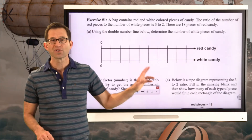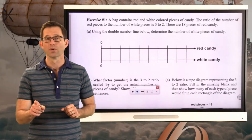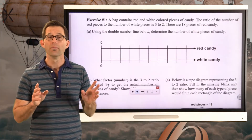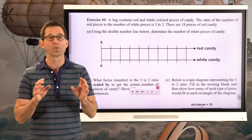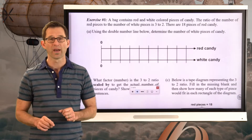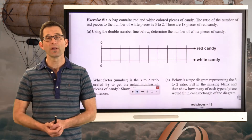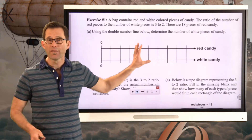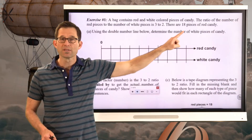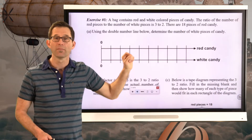We're going to start by using a double number line — a tool from the last lesson — then move to a tape diagram to see how the two approaches mirror each other, and then move only to tape diagrams. Exercise one: A bag contains red and white colored pieces of candy. The ratio of red to white pieces is 3 to 2. There are 18 pieces of red candy. Letter A: use the double number line to determine the number of white pieces.